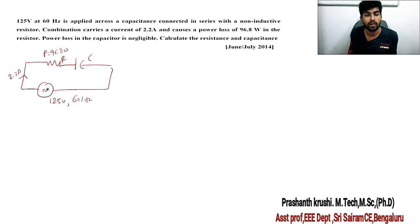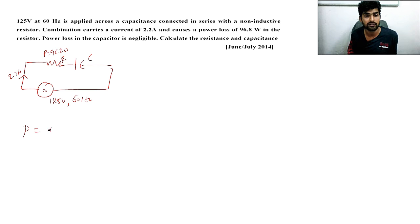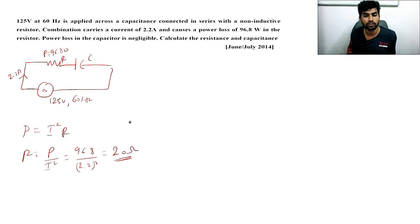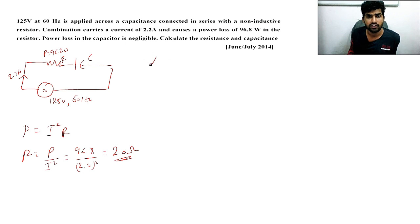The power loss in the capacitor is negligible. Calculate resistance R and capacitance C. Power loss is equal to I²R, so power dissipation occurs only in the resistance part. Therefore R = P / I² = 96.8 / (2.2)² = 20 ohms.